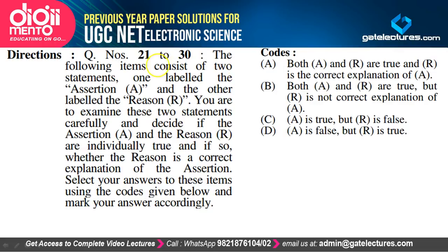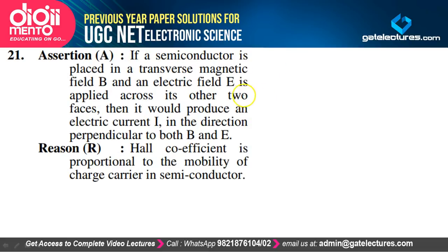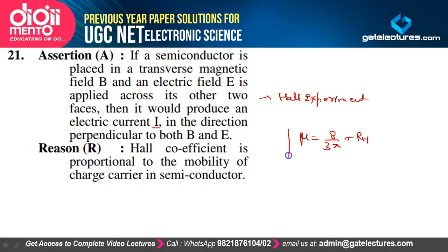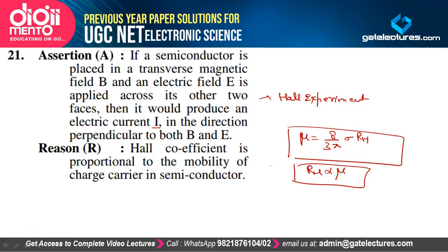Questions 21–30 are assertion-reason type. Question 21: If a semiconductor is placed in a transverse magnetic field B and electric field E is applied, it produces a current perpendicular to both B and E — this is the Hall experiment, which is correct. The Hall coefficient RH is proportional to the mobility of charge carriers (μ = (8/3π)σRH), so both statements are true, but R is not the correct explanation of A. Option B is correct.